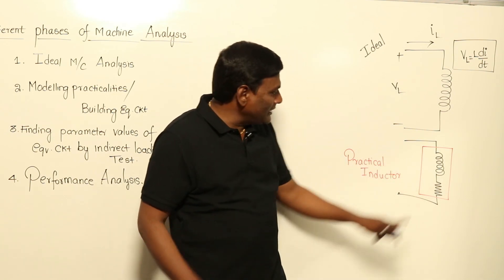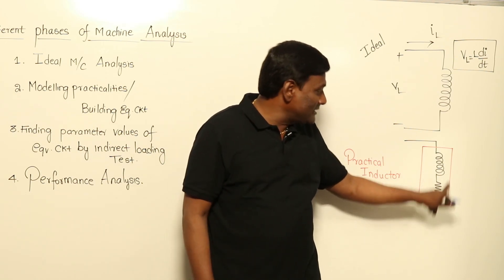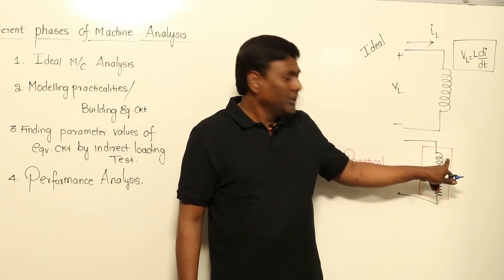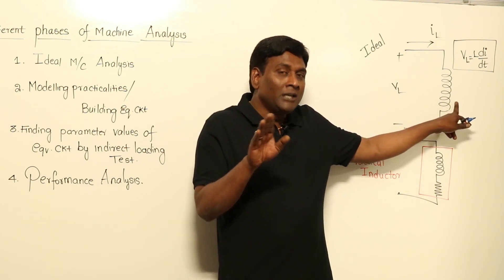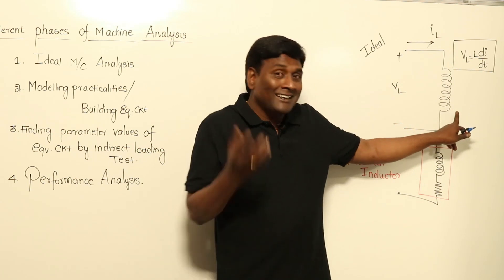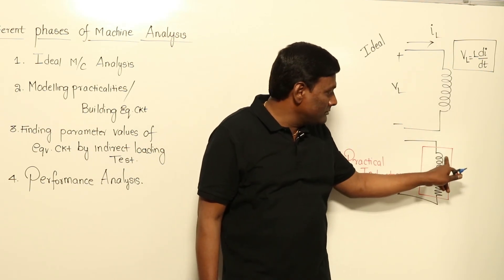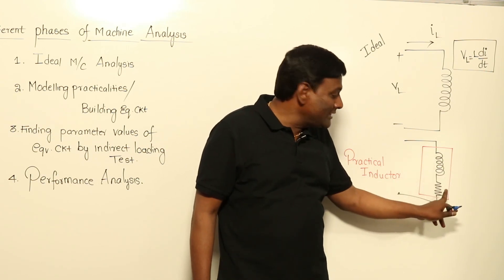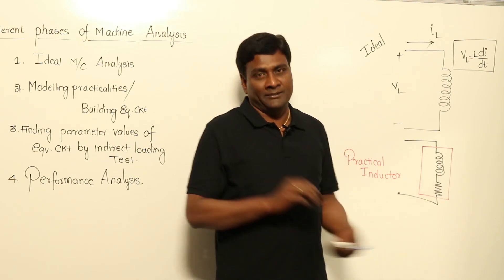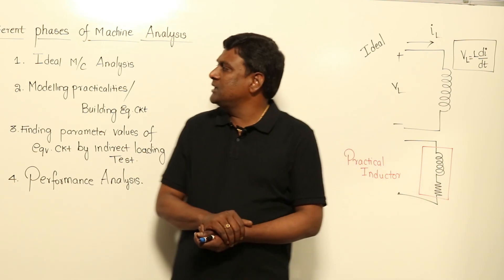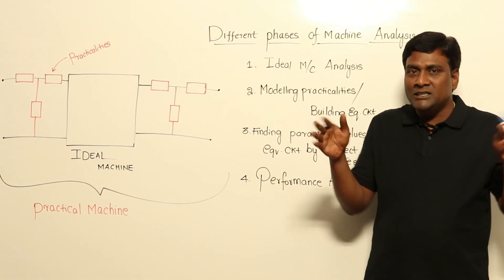In network theory, we analyze the purest form of inductance by not considering winding resistance. A practical inductor — a physically existing inductor — is modeled using network theory parameters as resistance and inductance. The ideal inductance exists in network theory only, while the practical inductor is modeled as pure inductance along with resistance, where the resistance represents the practicality.